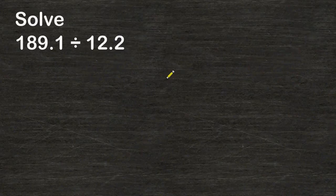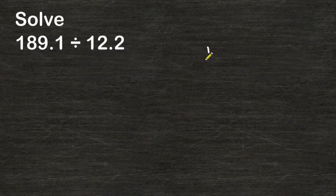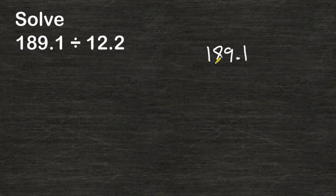Now let's try an example when you have a decimal present in the dividend as well as the divisor. So we are going to take 189 and 1 tenth and we are going to divide that by 12 and 2 tenths.